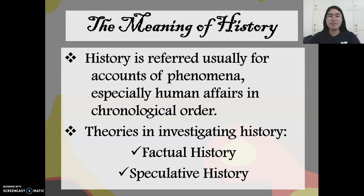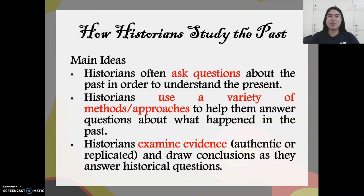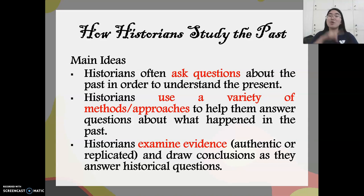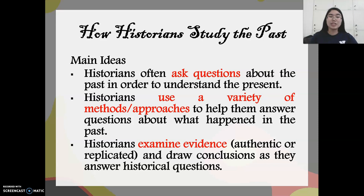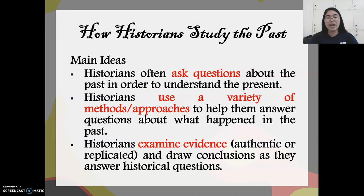There are theories in investigating history: factual history and speculative history. But before that, I have learned according to Dr. Arnolfo Ramos' given material that how historians study the past are the following. First, historians often ask questions about the past in order to understand the present. Next, historians use a variety of methods and approaches to help them answer questions about what happened in the past, meaning there are various methodologies in conducting historical research. And lastly, historians examine evidence, authentic or replicated, and draw conclusions to answer historical questions.